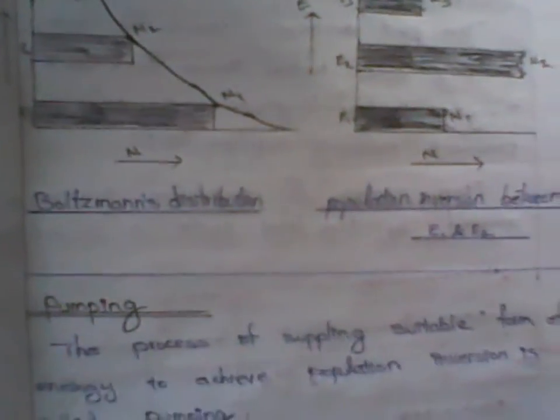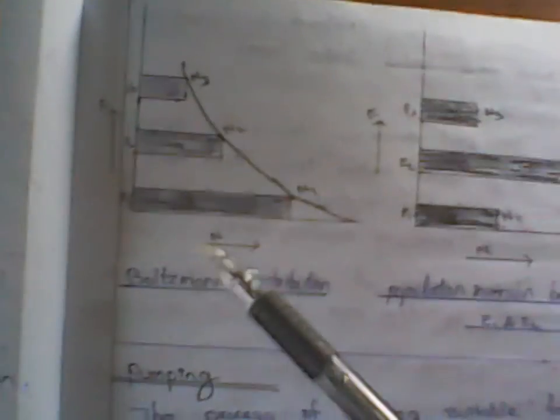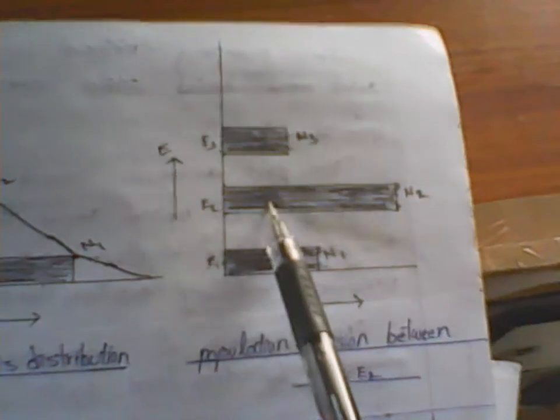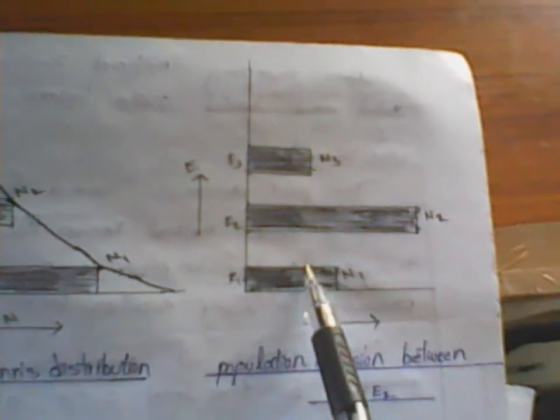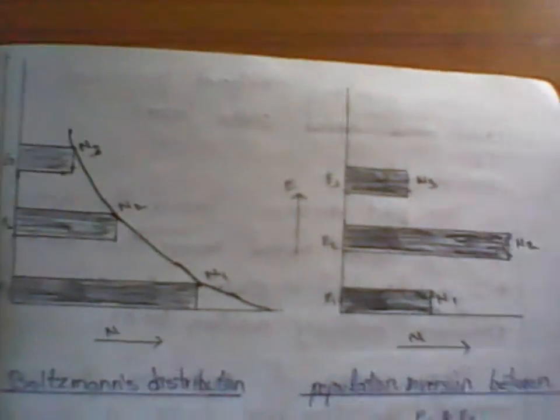Here I can show you the graphical representation of Boltzmann distribution and population inversion between energy levels E2 and E1. For Boltzmann distribution, the curve will be like this. For population inversion, the graph will be different - the electrons will be more in the metastable state rather than in higher or lower energy states. This condition is population inversion. Friends, thank you.